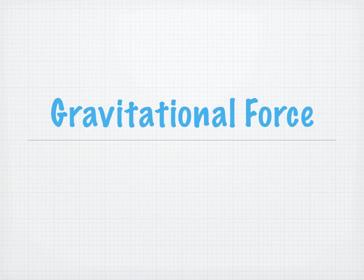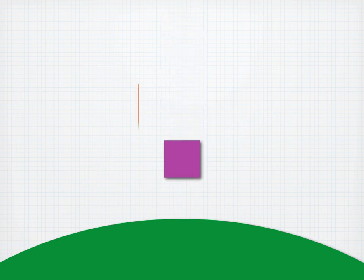The gravitational force is one of the main forces we encounter in our physics problems. When we talked about free fall, we talked about how objects on earth are accelerated toward the center of the earth with a magnitude of g equals about 9.8 meters per second squared.